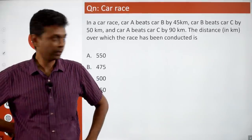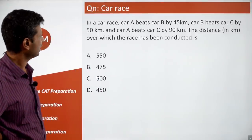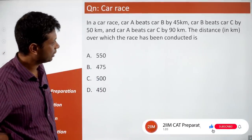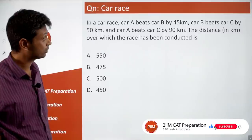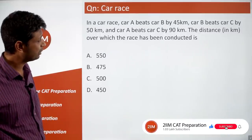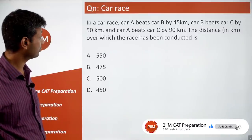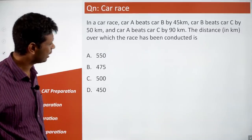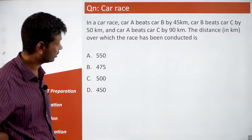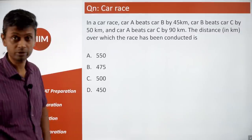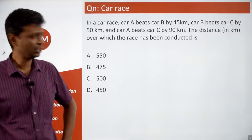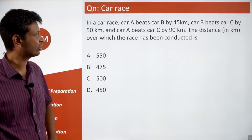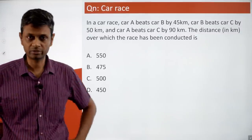In a car race, car A beats car B by 45 kilometers, car B beats car C by 50 kilometers, and car A beats car C by 90 kilometers. The distance in kilometers over which the race has been conducted is?